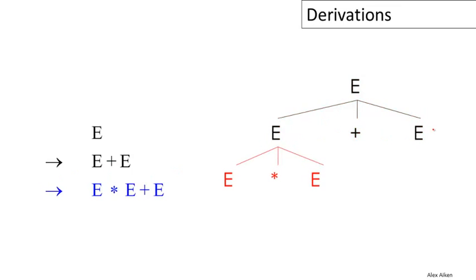Now we replace the first E by E times E. So we use the production E goes to E times E, and that means we take the first E in the tree and we give it the three children: E, times, and E.